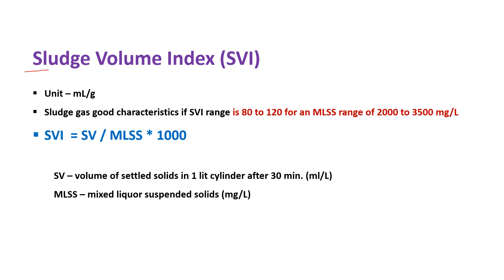The next is the sludge volume index (SVI), with units of milliliter per gram. The formula is: SVI = (volume of settled solids in a 1-litre cylinder after 30 minutes) divided by MLSS (mixed liquor suspended solids), multiplied by 1000. A sludge has good characteristics if the SVI ranges from 80 to 120, for a mixed liquor suspended solid range of 2000 to 3500 milligrams per litre.